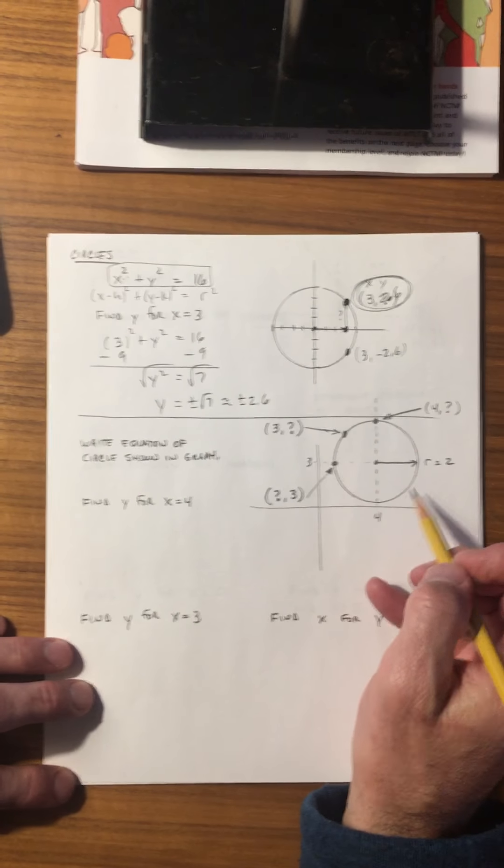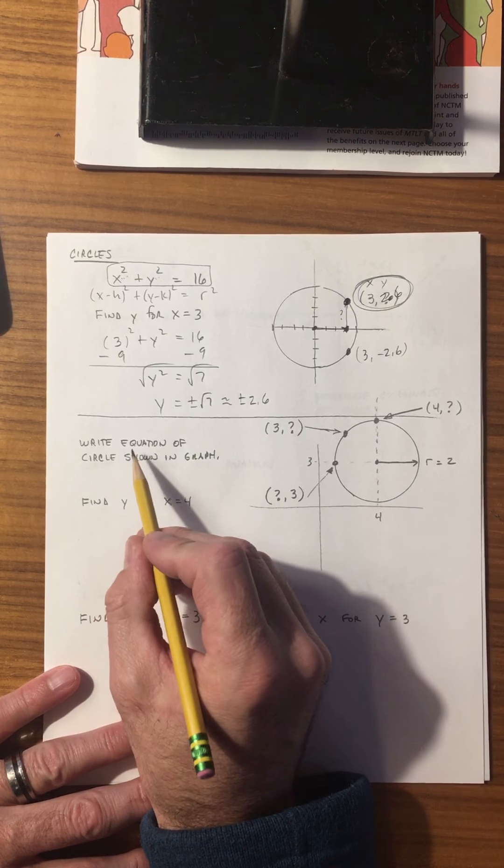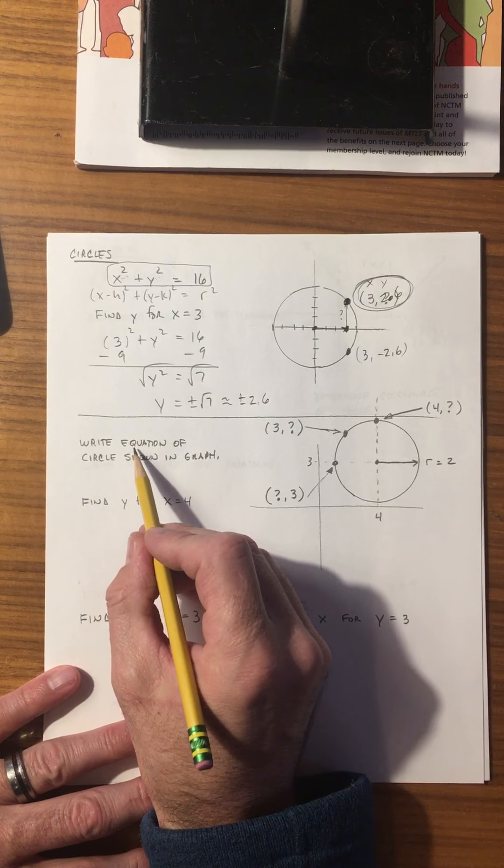Let's go to something a little more complicated. We have this picture over here and the first thing we have to do is write an equation for the circle shown in the graph. So x minus h squared plus y minus k squared equals r squared. The center is located at x equals 4 and y equals 3. We know the radius is 2, so 2 squared is 4. There's our equation.